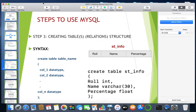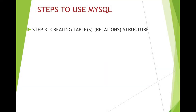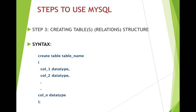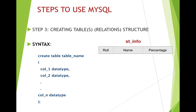This was our second step. Now let us go to the third step: creating the tables or the relations. Whenever I use the word 'tables' it means relations, and whenever I use the word 'relation' it means tables — you should not forget that. Third step is creating the tables. What is the syntax for creating the table? Now let us say we want to create a table named 'stinfo' and it should have the attributes or columns: role, name, and percentage.